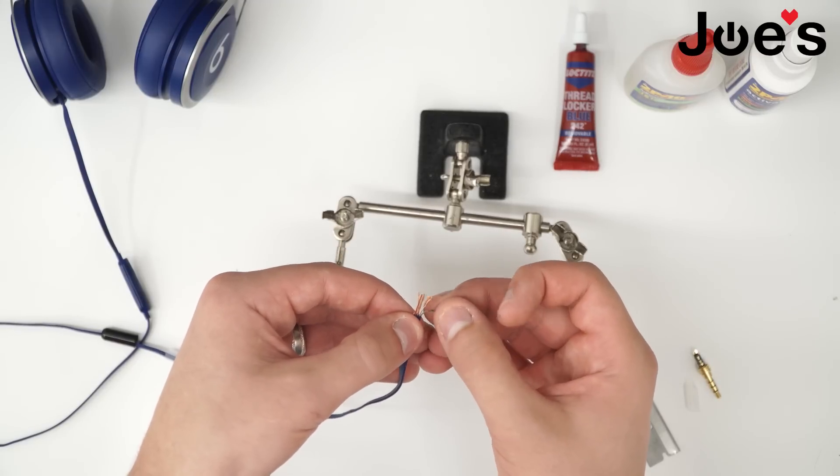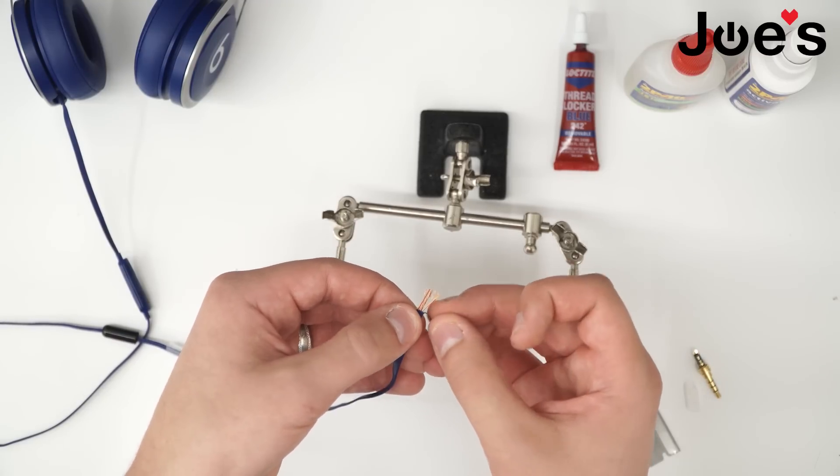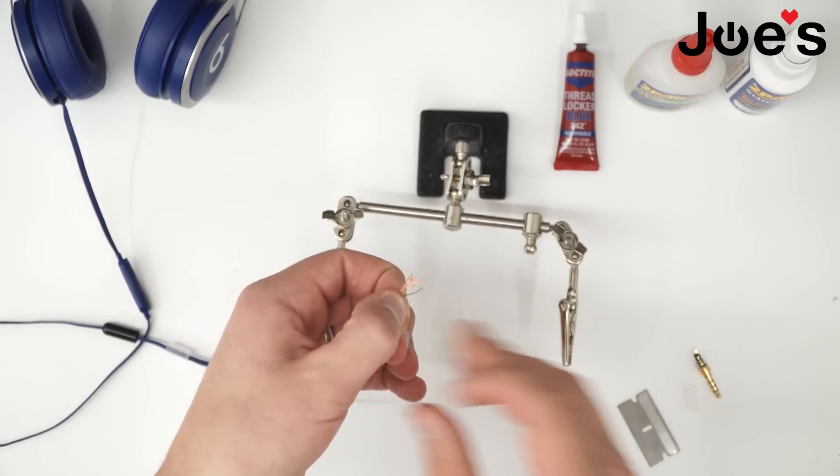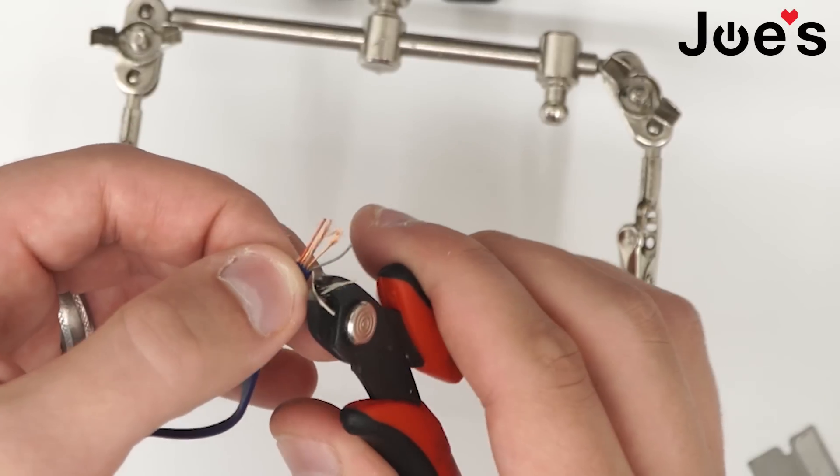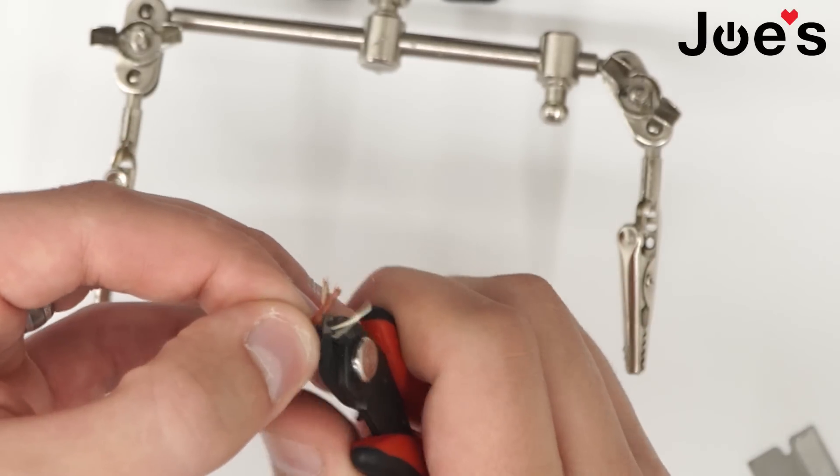It will be there on both sides. It will just get in the way of everything if you don't snip it off now. Make sure not to snip off the wires.